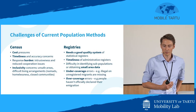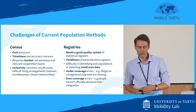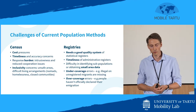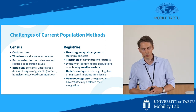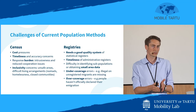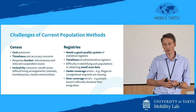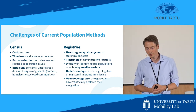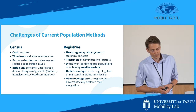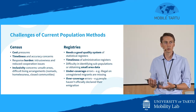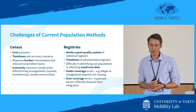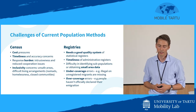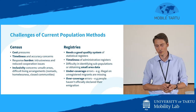There are challenges to current population methods. The high cost of the census is one issue — the census measures population at a certain time and place, but it doesn't always translate to what is happening during the day and night in a certain location. There are also under- and over-coverage issues with registries, and timeliness issues. Even if you have a good quality system of registries, you still run the risk of not knowing the dynamic nature of the population in your city.